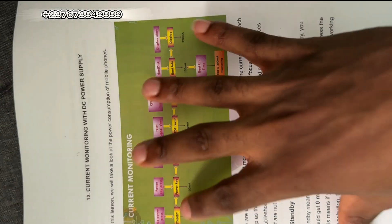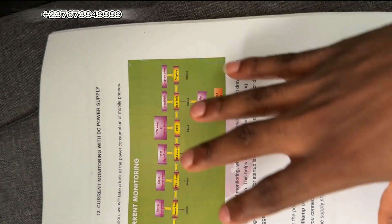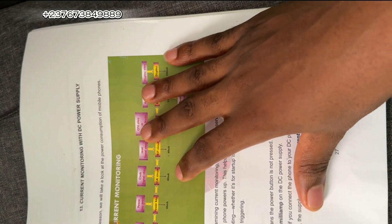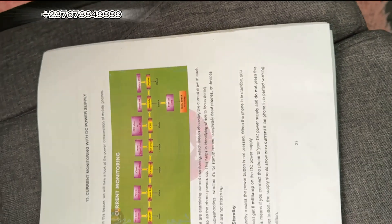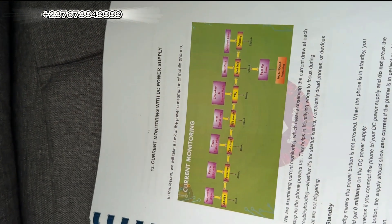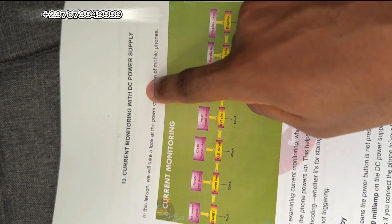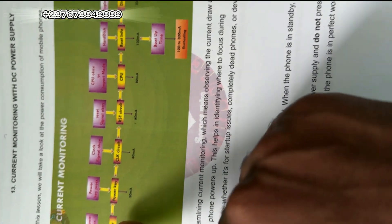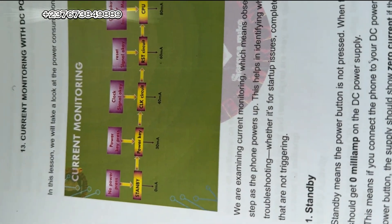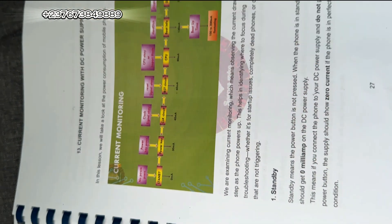When it comes to my book the Block Diagram Master, can you really use it to troubleshoot faults like this one? I will show you exactly how. You can send me a message on WhatsApp to get it, or use the link in the video description or the pinned comment. If you take a look at the section that says 'current monitoring with DC power supply,' you will see standby and power key - this section helps you know exactly what is going on when a phone is drawing a certain current.